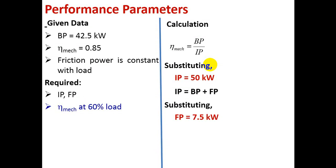Now for the second part — mechanical efficiency at 60 percent load. The formula is the same: BP divided by IP. But you need to know what BP is at 60 percent load. Here BP is given as 42.5 kilowatt, which is 100 percent load. For 60 percent load, multiply this by 0.6. Now you know BP. Then for IP, use IP equals BP plus FP, and since FP is constant with load, substitute accordingly. The only unknown is mechanical efficiency.